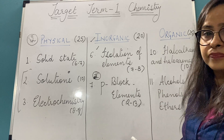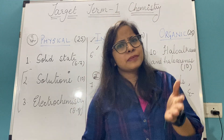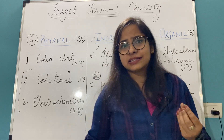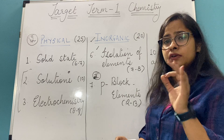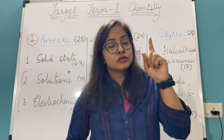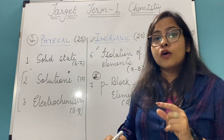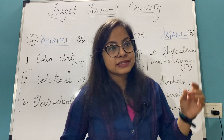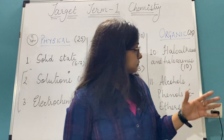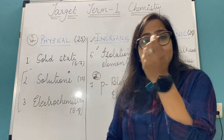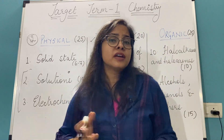The first unit is Haloalkanes and Haloarenes. From this you can expect SN1 and SN2 reactions. There are many named reactions that can be asked — you cannot leave them. Named reactions are very important. Along with SN1 and SN2 conversions, you may also be asked to arrange compounds in increasing or decreasing order of acidity, basicity, etc. These are the types of questions you should expect.